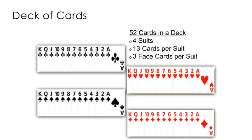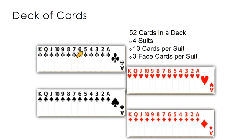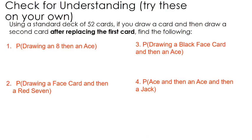Before we go further, a lot of probability questions deal with decks of cards, and many students aren't familiar with them. There are four suits — two are red, two are black. The four suits are hearts, diamonds, clubs, and spades. Within each suit it goes from ace all the way to king. The jack, queen, and king are called face cards, so there are three face cards in every suit. There are 13 cards in every suit and four suits, making 52 cards total. Write that down if you're not familiar with it.